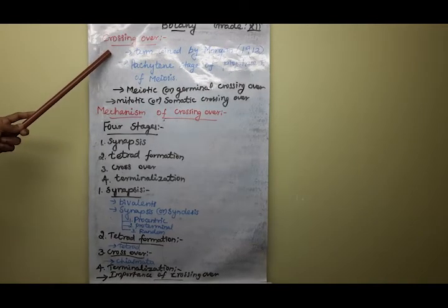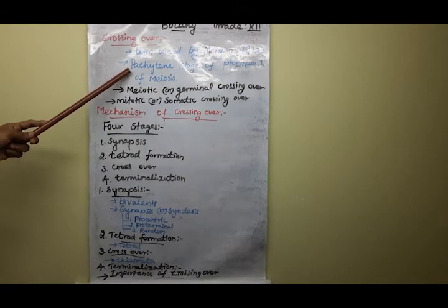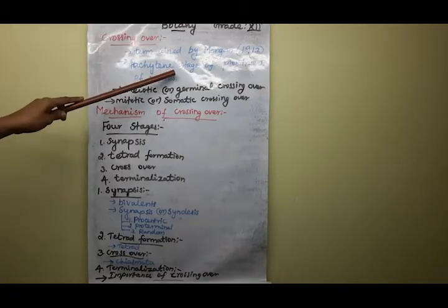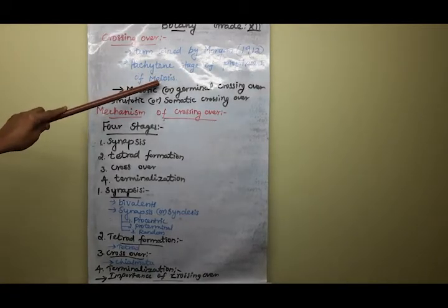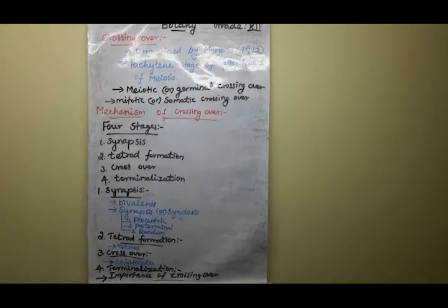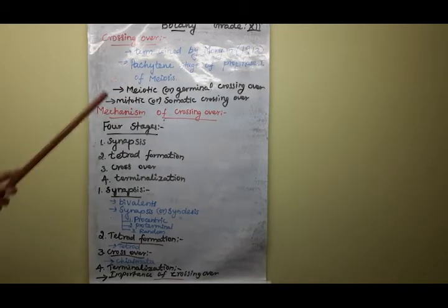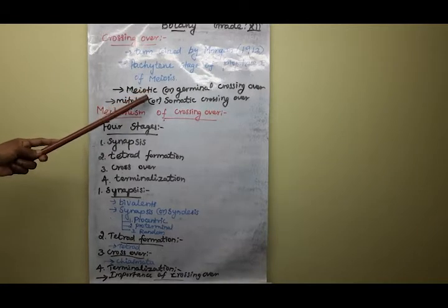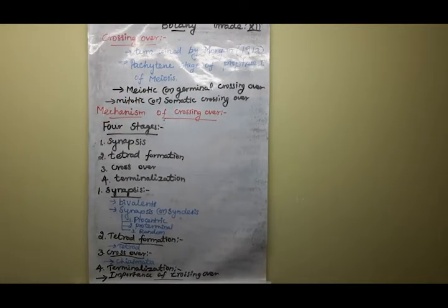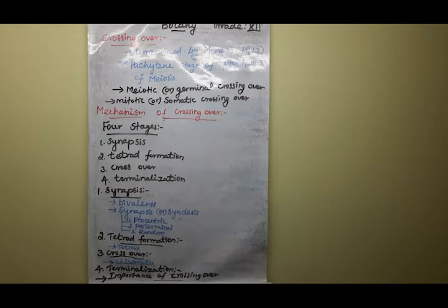Crossing over takes place during the pachytene stage of prophase I of meiosis cell division. There are two types of crossing over: one is meiotic or germinal crossing over, and another one is somatic or mitotic crossing over.